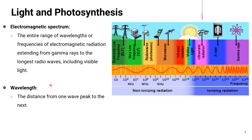All radiation in the electromagnetic spectrum, extending from gamma rays to the longest radio waves including visible light, travels as waves. A wavelength is the distance from one wave peak to the next.